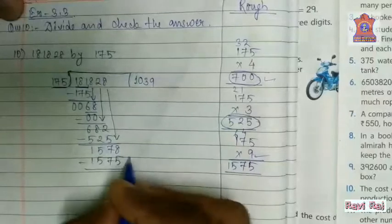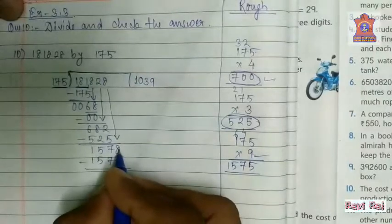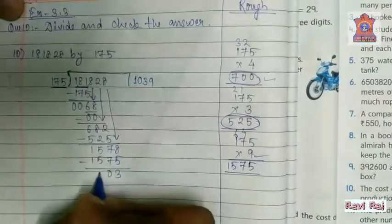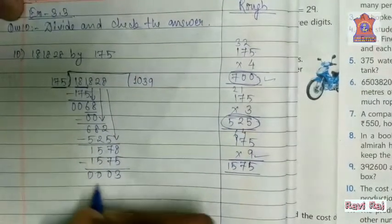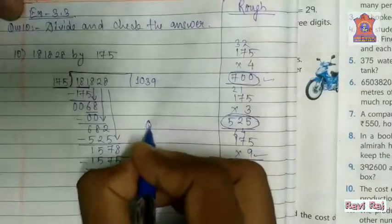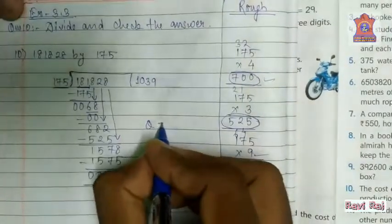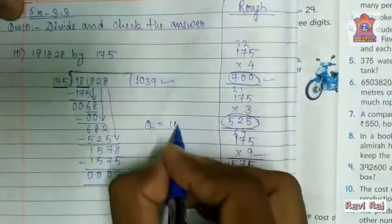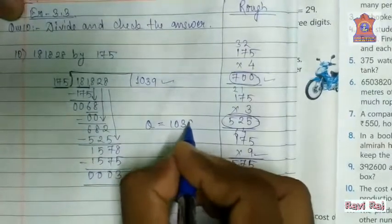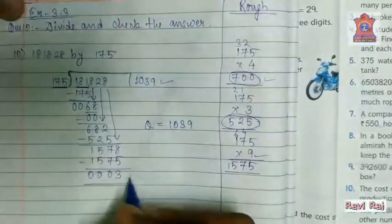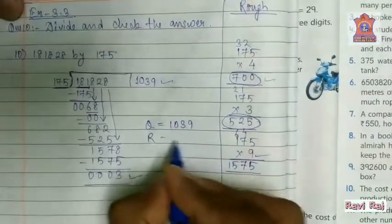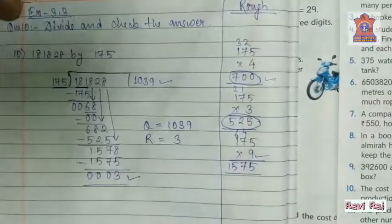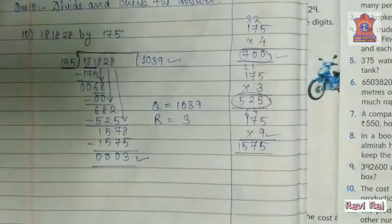Now subtract. 8 minus 5 is 3. 7 minus 7 is 0. So here we have got quotient equals to 1039 and remainder as 3 only. Here we have done the division.